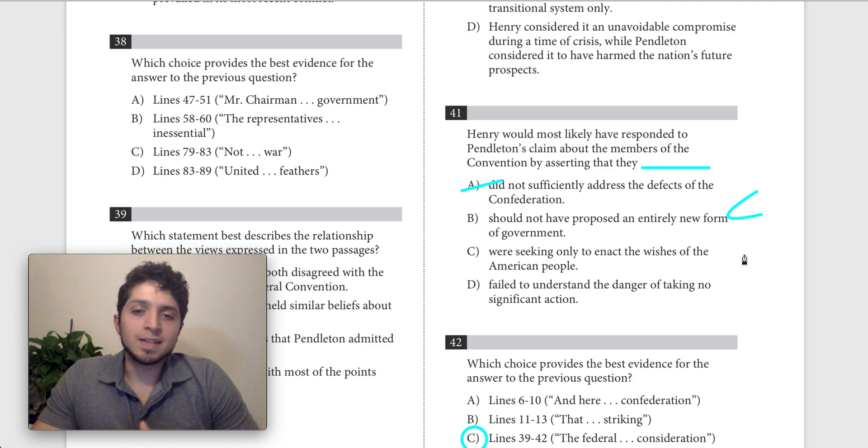If anything, I think he would say that the convention is, maybe it is enacting the wishes of the American people, but I don't think he agrees that that's a proper justification. Remember, he says he wants to put states' rights over people's rights. So it would be weird for him to be making this argument. But the most important thing is it's not in any of the texts.